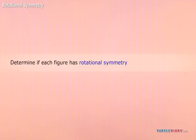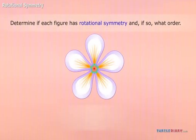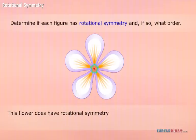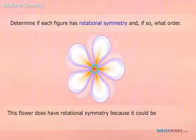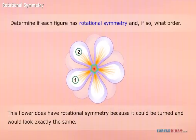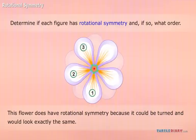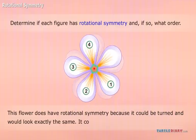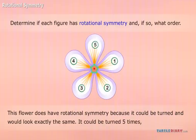Examples: Determine if each figure has rotational symmetry and, if so, what order. This flower does have rotational symmetry because it could be turned and would look exactly the same. It could be turned five times, so the order is five.